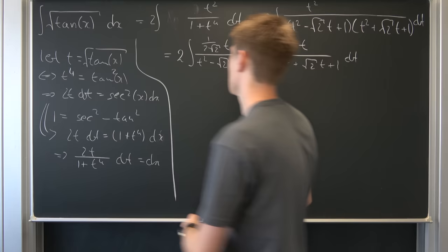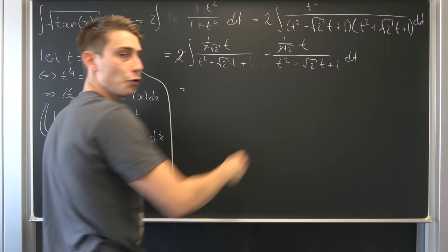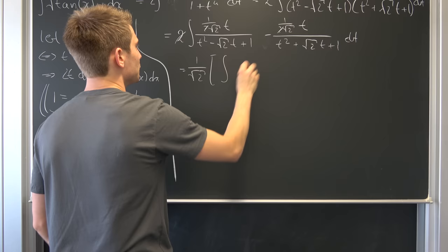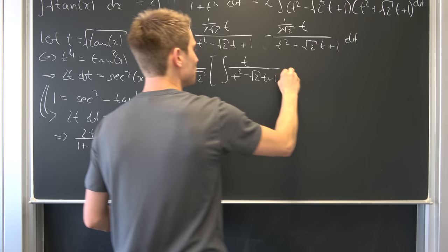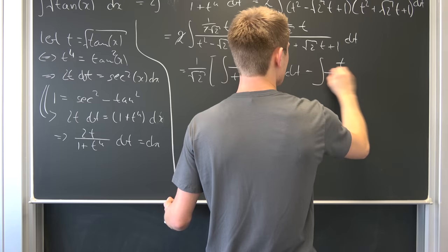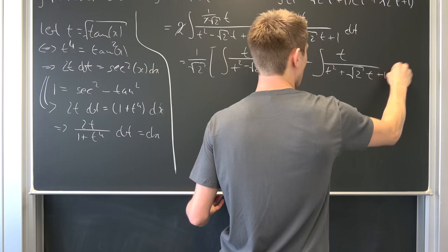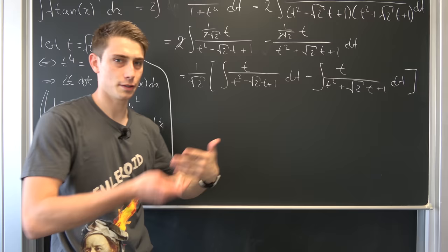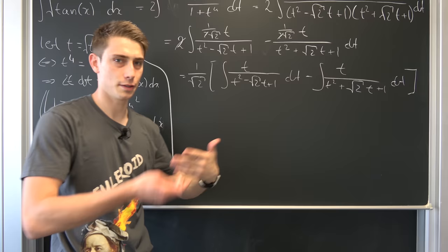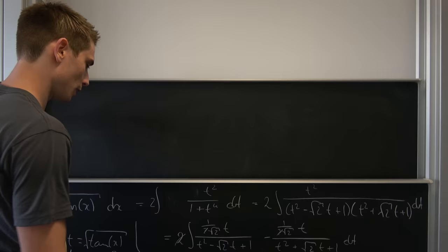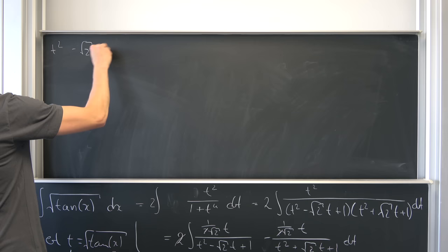That also means we are going to end up with a factor of 1 over square root of 2 times two integrals. The integral of t over t squared minus square root of 2 times t plus 1 dt, and also minus the integral of t over t squared plus square root of 2 times t plus 1, integrated with respect to t. What we should do now is probably bring these denominators into proper form — that's most of the time what you have to do with rational functions like this. So why not complete the square on these?